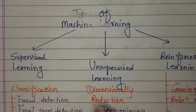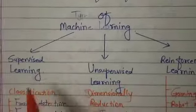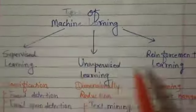There are three types of machine learning: supervised machine learning, unsupervised machine learning, and reinforcement learning.